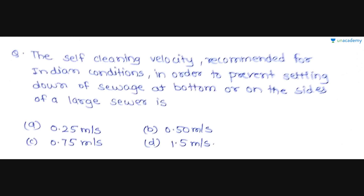Next question: the self-cleansing velocity recommended for Indian conditions to prevent settling down of sewage at the bottom or sides of a large sewer is? The normal range for self-cleansing velocity is 0.6 to 0.9 meters per second. Within that range, 0.75 meters per second is important to remember. The correct option for this question is 0.75 meters per second.